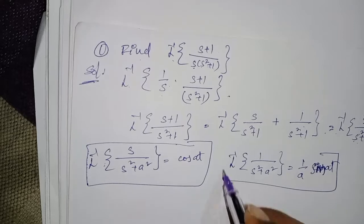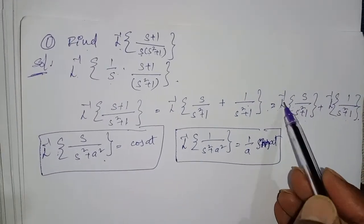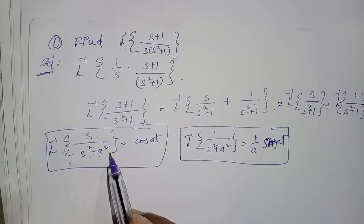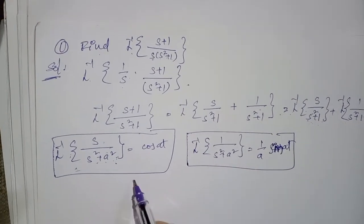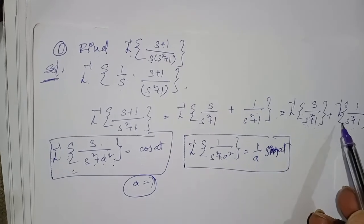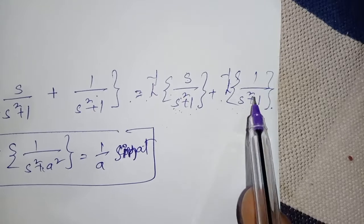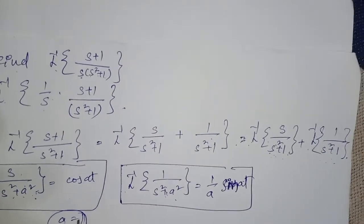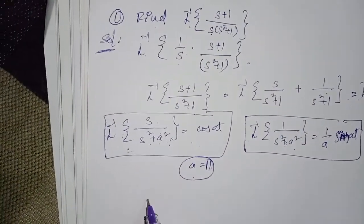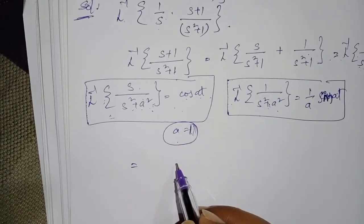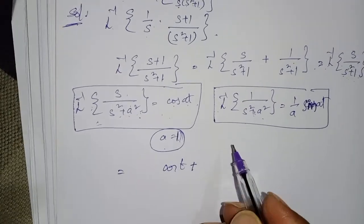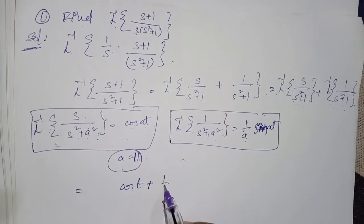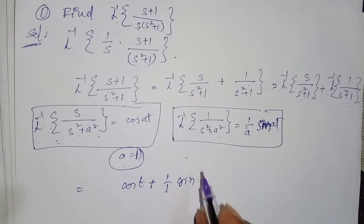Compare the first term: L inverse of 1/(s²+1²) — here a²=1, so a=1. Compare the second term: L inverse of 1/(s²+1) — here also a=1. Substituting: first term gives cos(t), and the second term gives (1/1)sin(t), so a=1 gives sin(t).